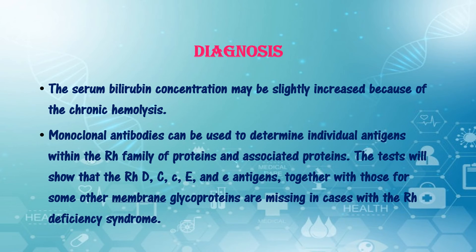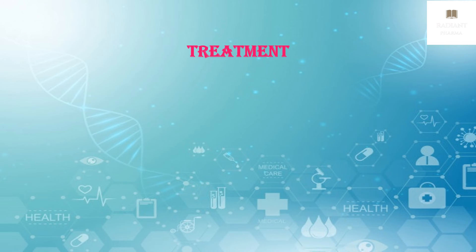Monoclonal antibodies can be used to determine individual antigens within the RH family of proteins and associated proteins. The test will show that RHD and a combination of RHCE antigens, together with those of some other membrane glycoproteins such as RH associated glycoproteins, are missing in cases of RH deficiency syndrome.